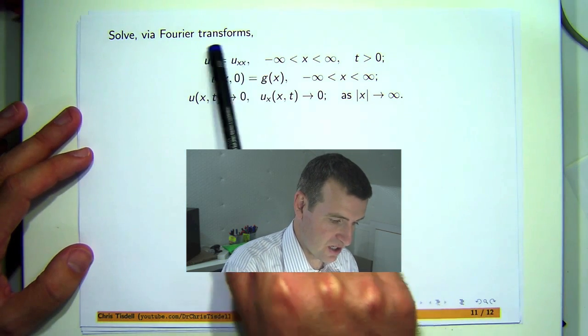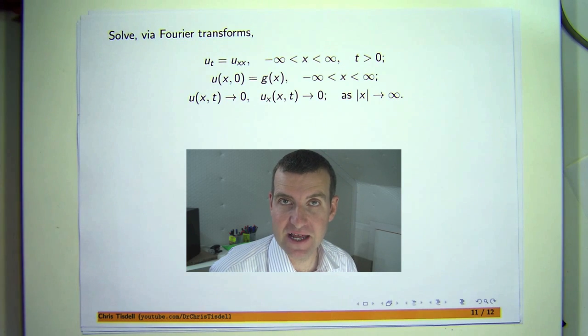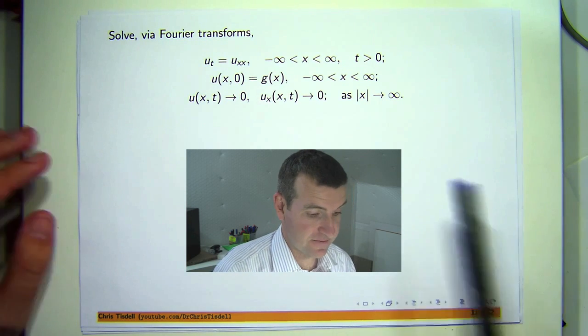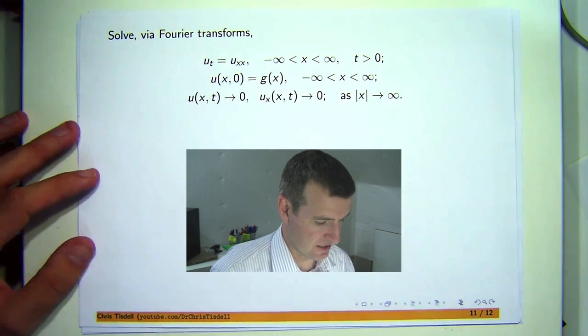So we've got a partial differential equation here. It might represent the temperature at position x and time t in some infinitely long bar. You've got some initial temperature and some limiting conditions.